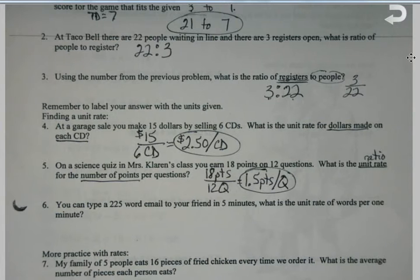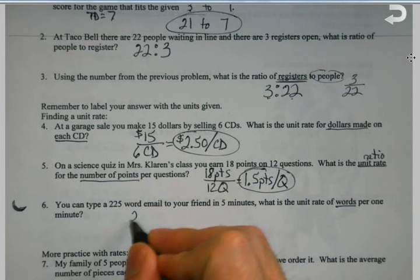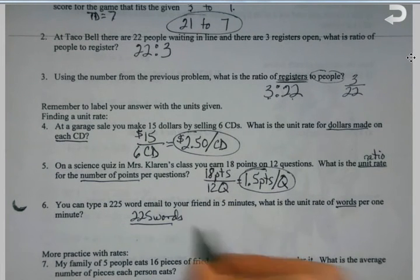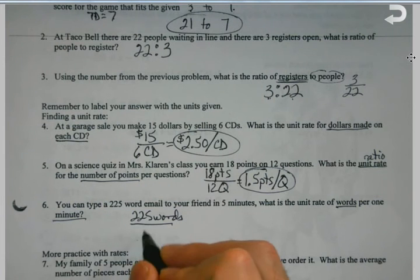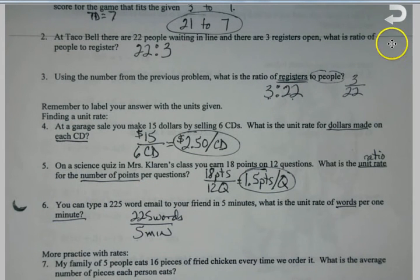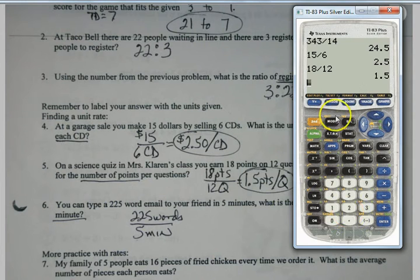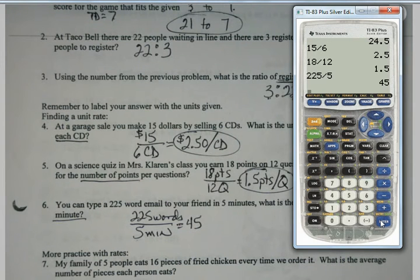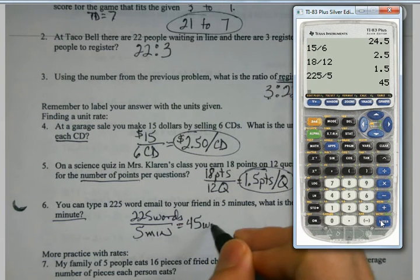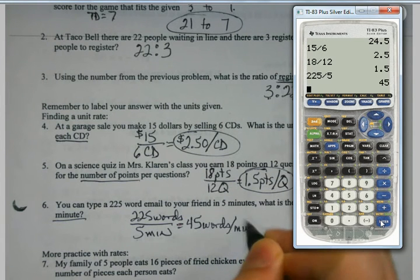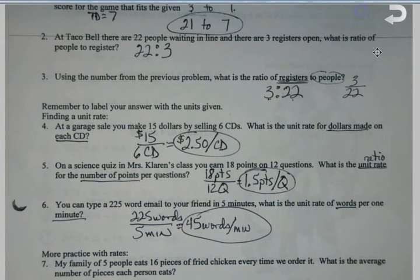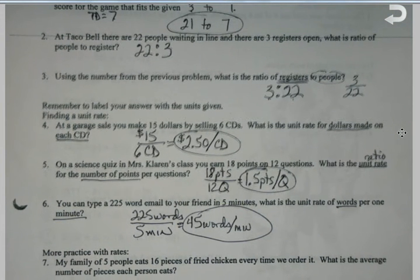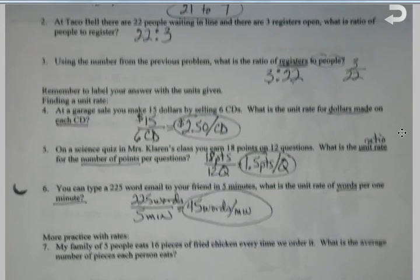You can type a 225 word email to your friends in five minutes. What's your unit rate of words per minute? So when I divide that, I get 45 words per minute. That's how you figure out a rate in anything. If you're typing, if you're doing math facts, whatever it happens to be, there's always a speed involved with it.